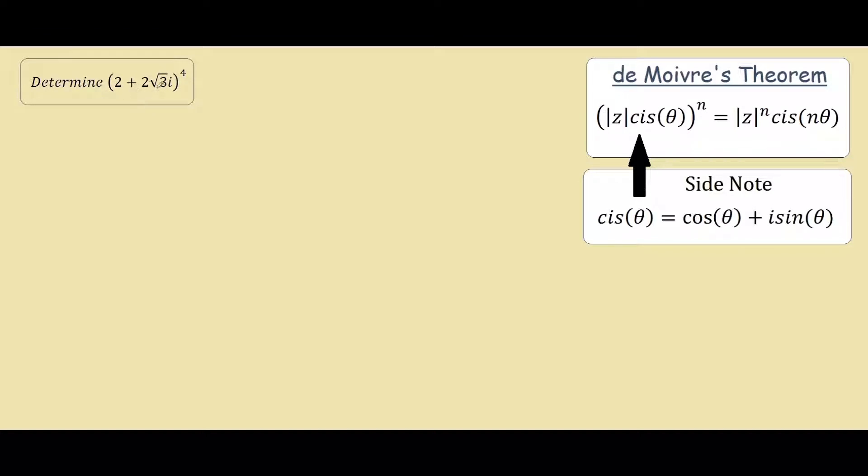So let's just focus on 2 plus 2 square root of 3. If we change that to polar form, it has a magnitude of 2 squared plus 2 square root of 3 squared, and taking the square root of that, and if we work that out, this would be equal to 4.